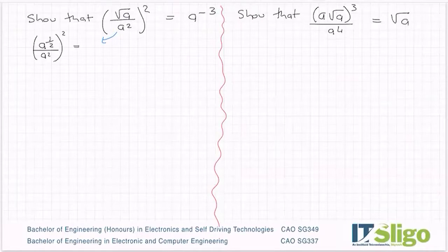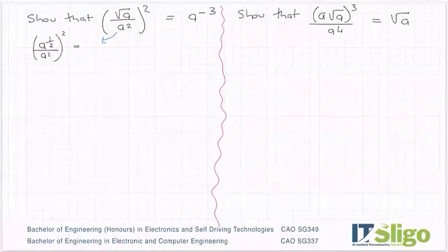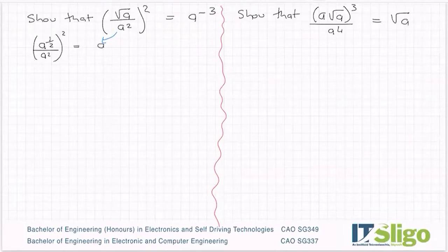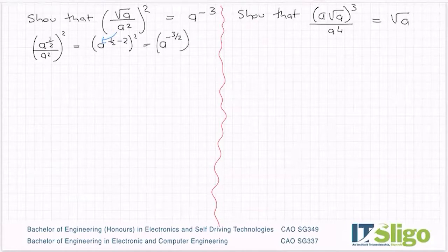If I look at the divide — when I have a to the power of p divided by a to the power of q, it's telling me to subtract my powers. So I have a to the power of a half over a to the power of two, and it's always top minus the bottom. So into my calculator I am doing a half minus two, and I'm getting minus three over two. So I'm getting a to the power of minus three over two, all to be squared.